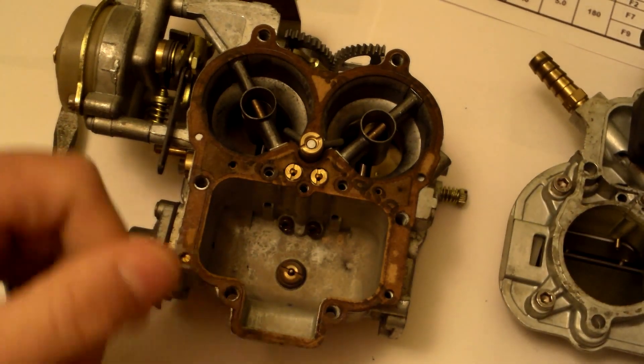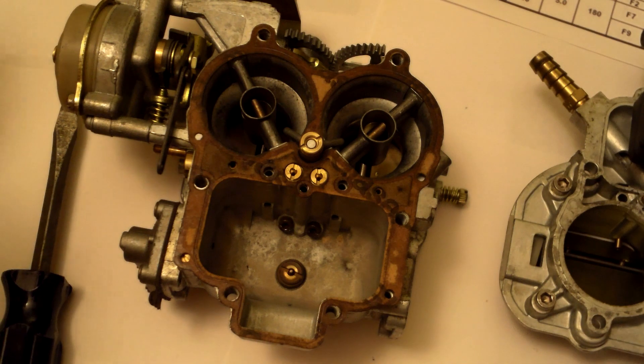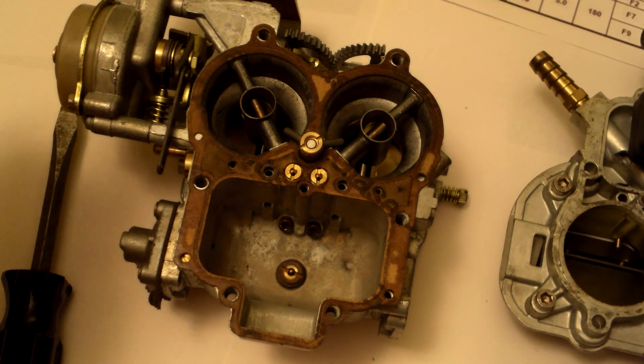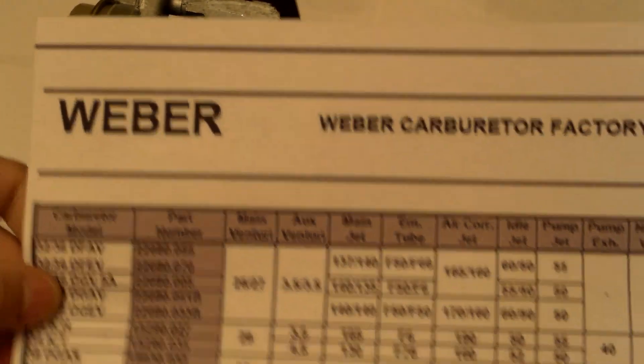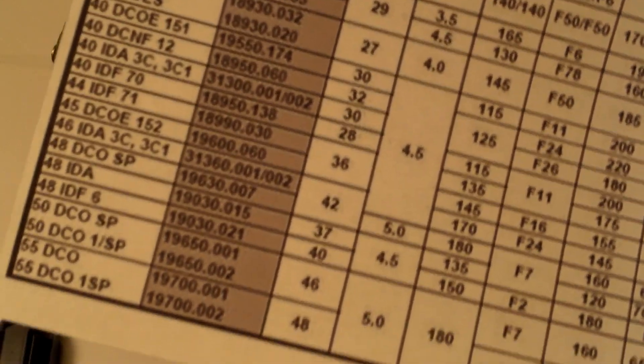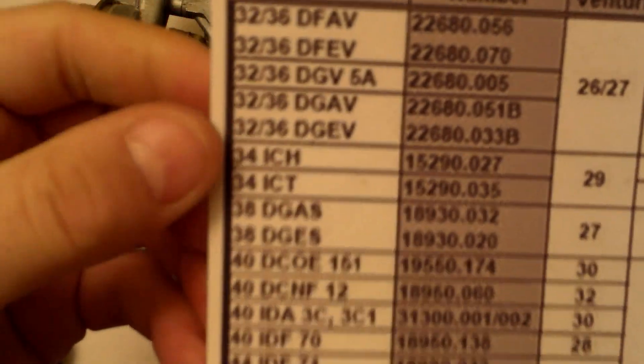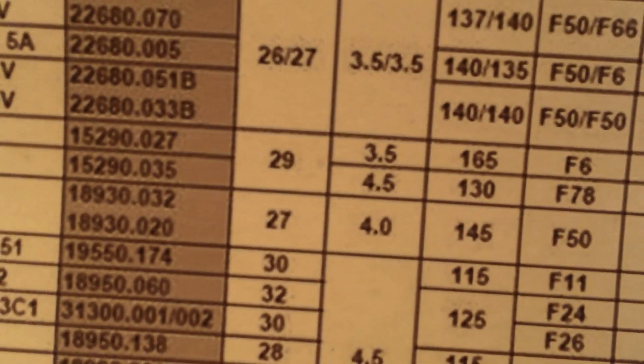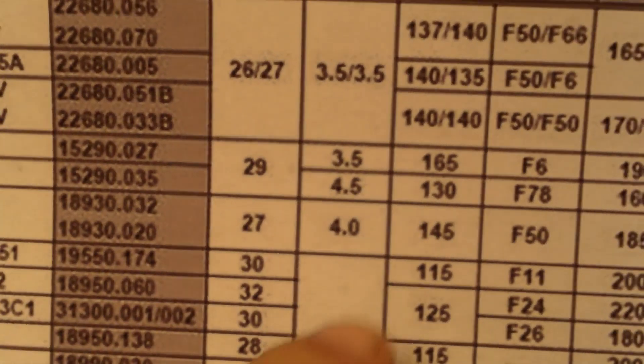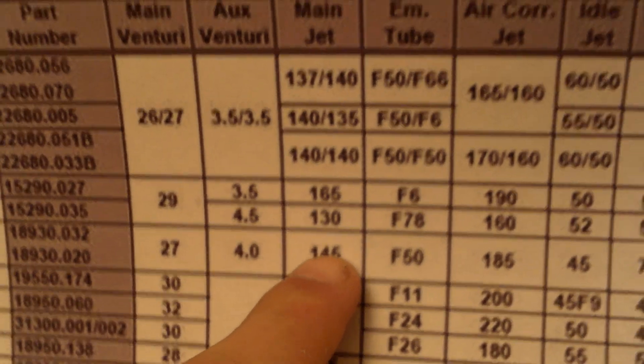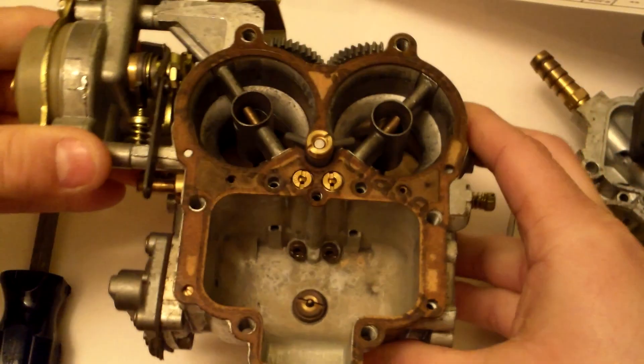Those of you who buy Weber carburetors on eBay, first things first, take it apart and check all the parts and make sure that they match with the original factory calibrations. Weber shows all their information on a page like this. This is every single factory calibration for every single carburetor they make. And for the 38 DGA or DGES, we have the main Venturi 27, which is correct. The main jet, which is right in there in the bottom of the bowl. They're 145s.